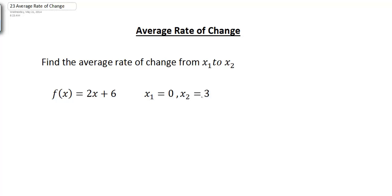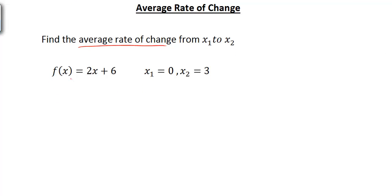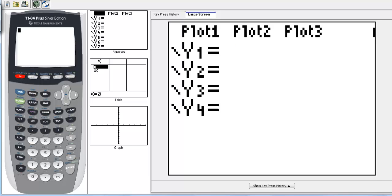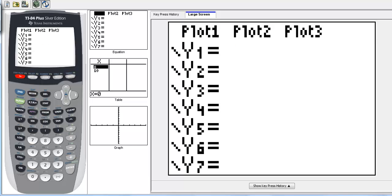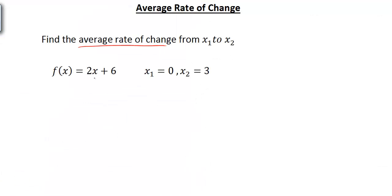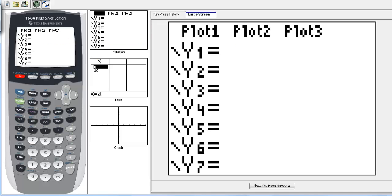We want to figure out what is the average rate of change from x1 equals 0 to x2 equals 3. To start off, let's go ahead and graph our function using the calculator. If we go to y equals, we're simply going to type in 2x plus 6.